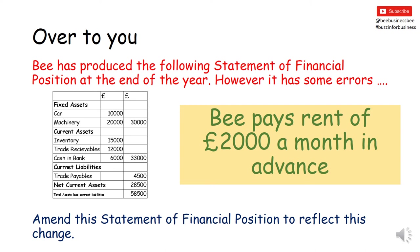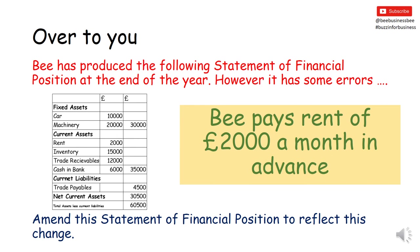B has also given you the Statement of Financial Position for the end of the year, but it's got some errors, and B's now got to account for this rent. Hopefully you've either created a new column for rent in the Current Assets section or just increased the Total Current Assets by adding the £2,000 in, which would increase your Total Current Assets to £35,000. That affects your Net Current Assets — Current Assets minus Current Liabilities — and also impacts the overall value of the company: Fixed Assets Total plus Net Current Assets, which would have increased to £60,500.